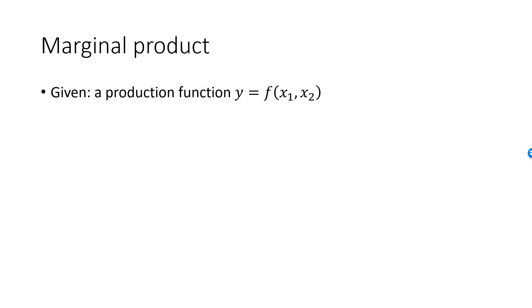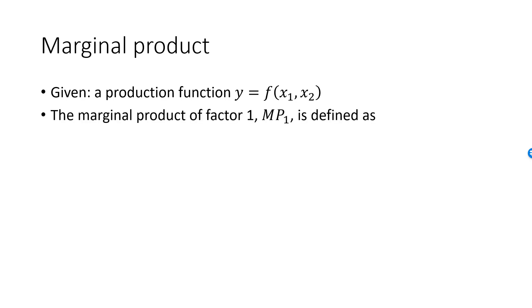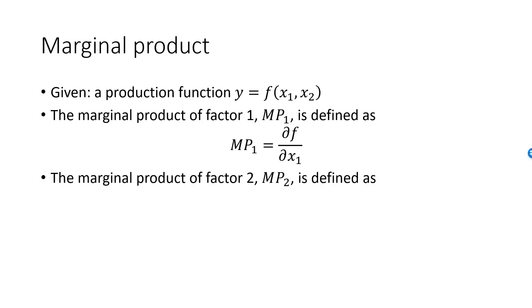Let's define one of the most important concepts in microeconomics: the marginal product. We have a two-factor production model with a given production function. y is some function of x1 and x2. We define the marginal product of the first factor, denoted by MP1, as the partial derivative of f with respect to x1. Similarly, MP2 is defined as the partial derivative of f with respect to x2. The marginal products are to the production function what the marginal utilities are to the utility function — just simple partial derivatives.